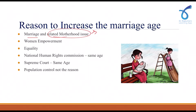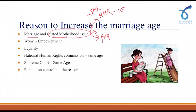Secondly, the health of girls — many girls who marry at an early stage are malnourished, and they face issues during pregnancy. This leads to a higher maternal mortality rate as well as a higher infant mortality rate. If we compare the statistics, the maternal mortality rate is nearly more than 100, and the infant mortality rate is nearly 28 per thousand live births.